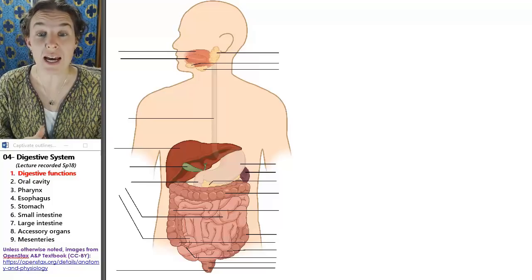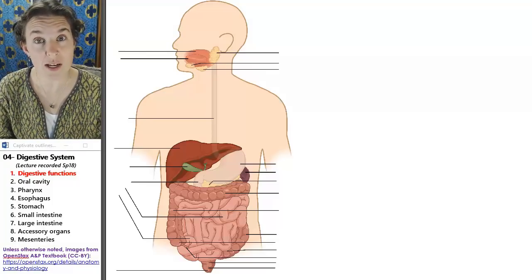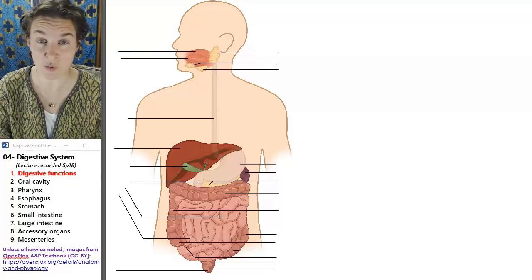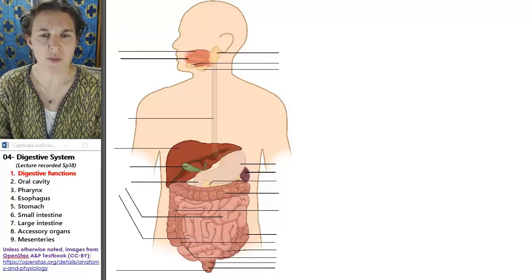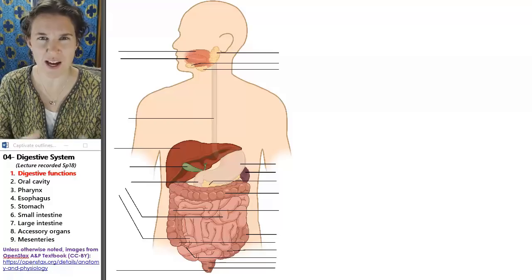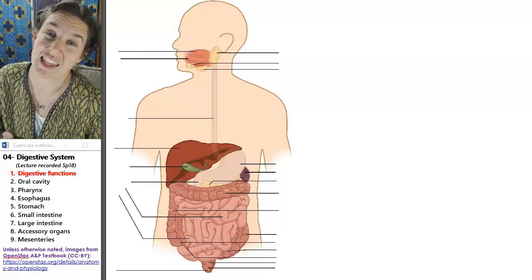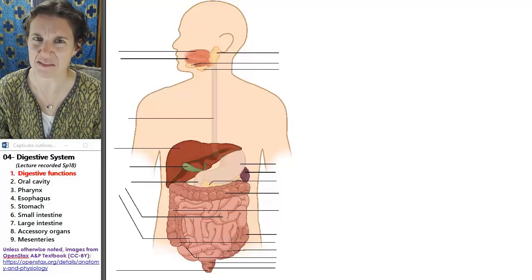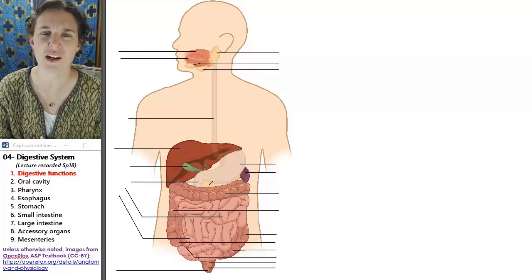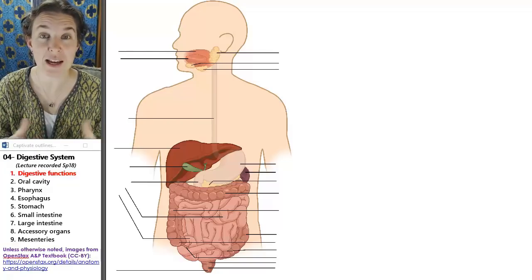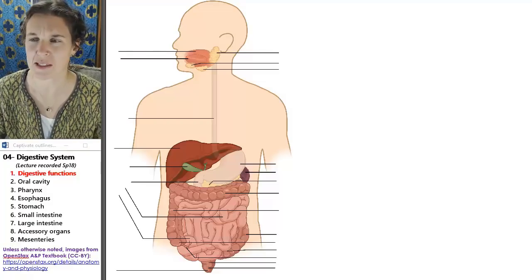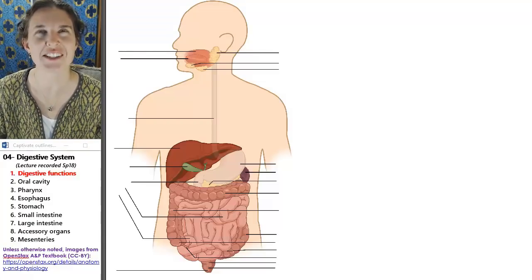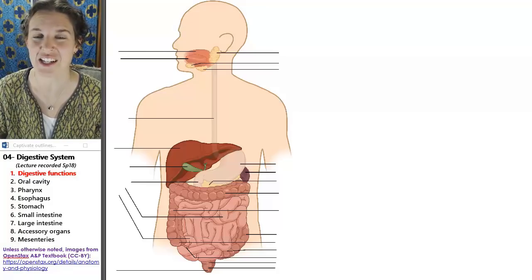We also looked at mucous membranes and serous membranes. In this lecture, basically the entire digestive system is lined with mucous membrane, so there will be some review happening when we think about the fact that the digestive system is the inner tube in our body plan. And there's a whole bunch of serous membrane fun times we're going to explore with the peritoneum, because that is a serous membrane that lines the peritoneal cavity and has some interesting structural consequences in the digestive system.